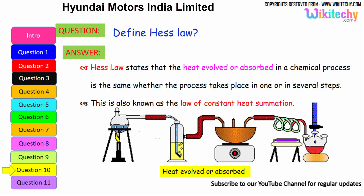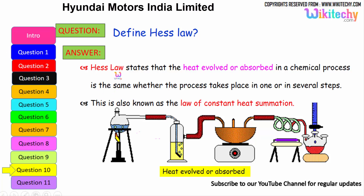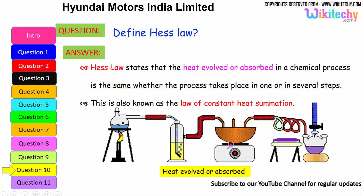Define Hess's law. This is one of the very important questions. Hess's law states that the heat evolved or absorbed in a chemical process is the same whether the process takes place in one or in several steps. This is also known as the law of constant heat summation.